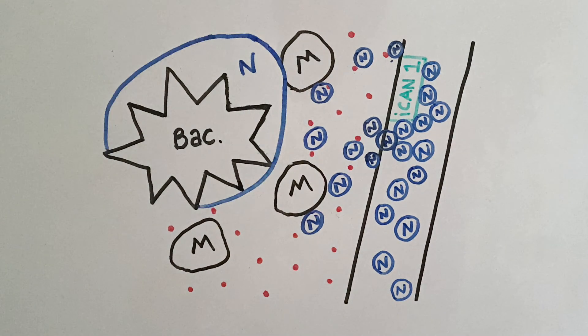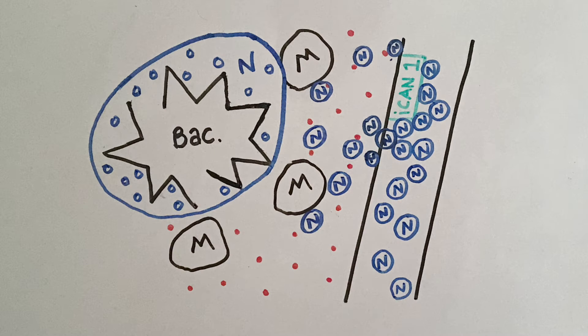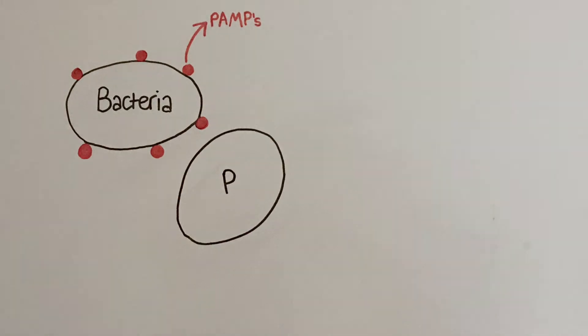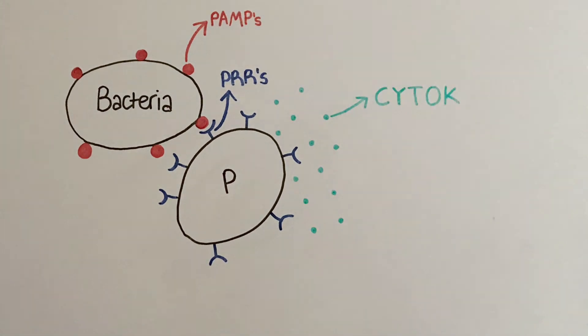Then they phagocytose the bacteria, breaking them down in their phagolysosomes with lysosomal enzymes. All cytokines are secreted in response to bacterial PAMPs, which stands for pathogen-associated molecular patterns, being recognized and binding to immune cells' PRRs, which stands for pattern recognition receptors.